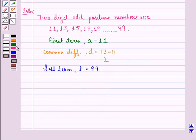Now, we know that A_n, that is the nth term, is equal to A plus (n-1) into D, where A is the first term, D is the common difference, and n is the number of terms.